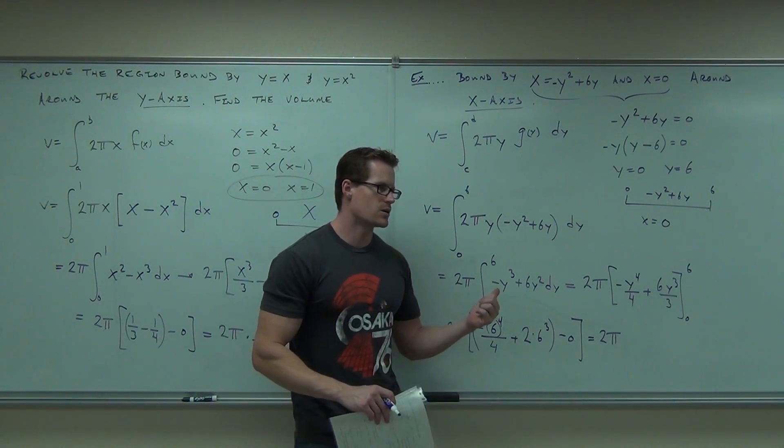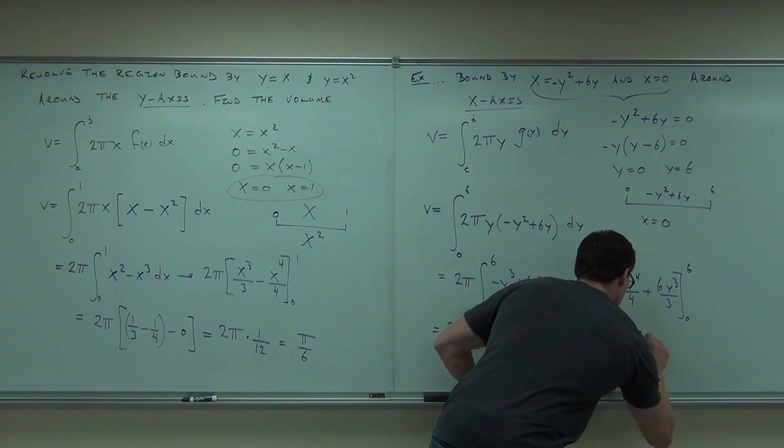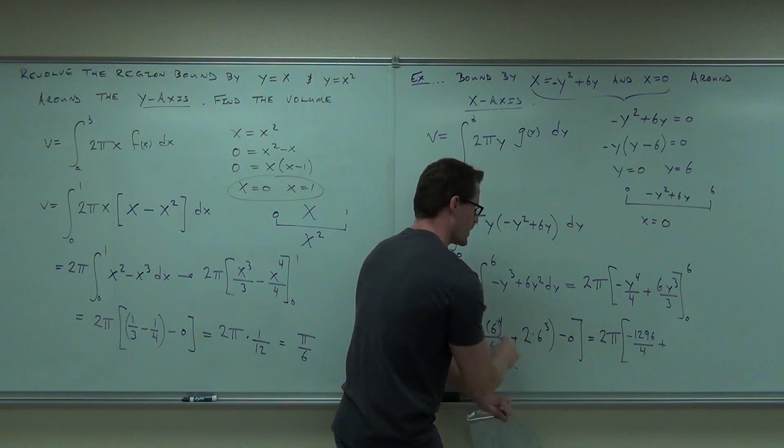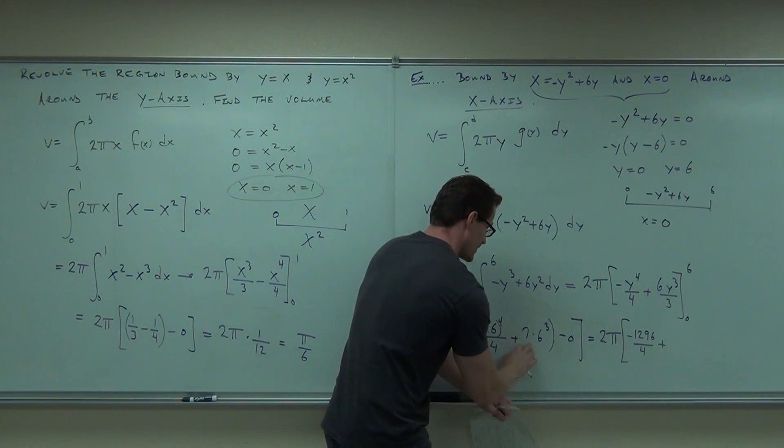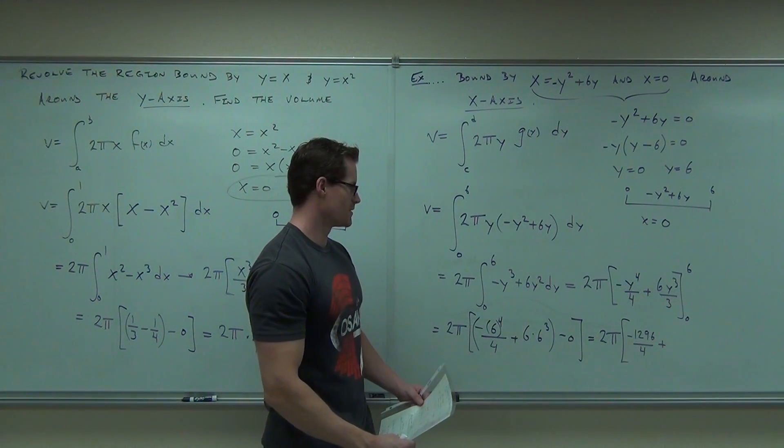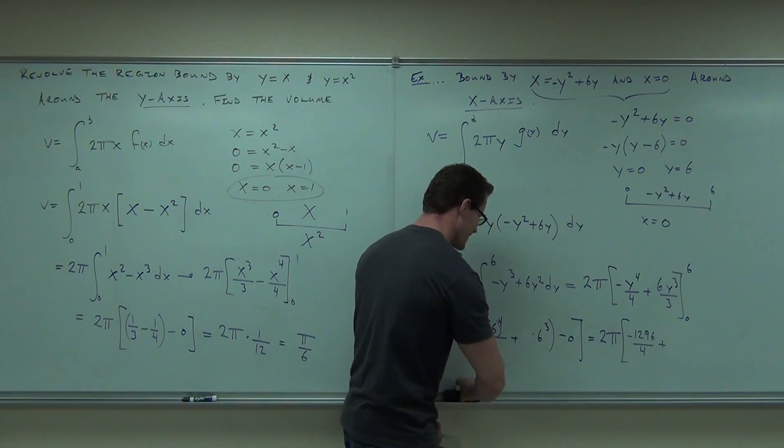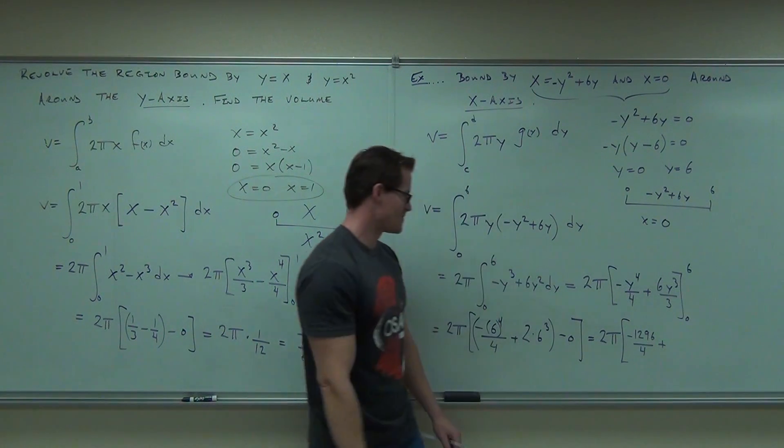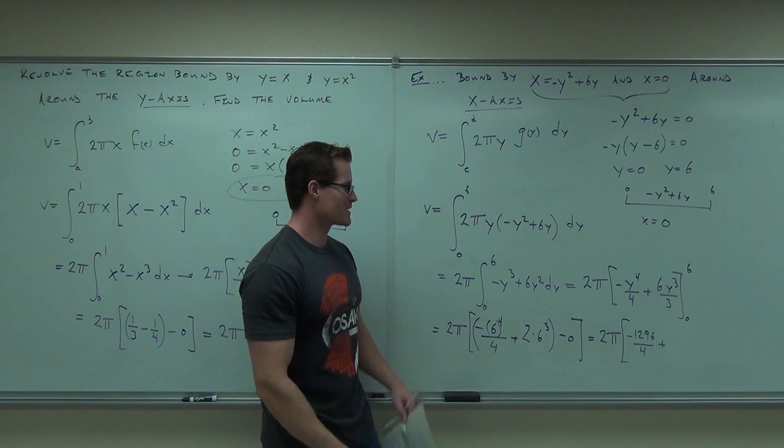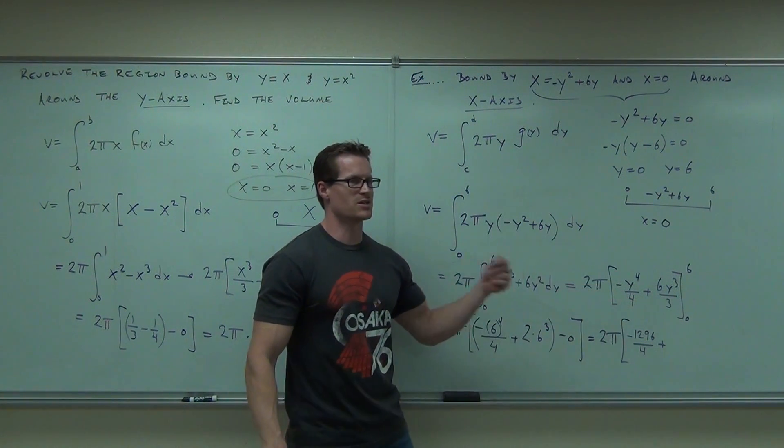So you get negative 1,296 over four plus—oh, you know what? I made a big mistake. Do you see it? That should be a, I don't know where I got the two from, but that should be a six. I saw that two. Oh, I did. I did it right. Oh, look at that. I was a genius. I did it in my head. My bad. You know why? Because I was going to do six to the fourth again and divide by three.